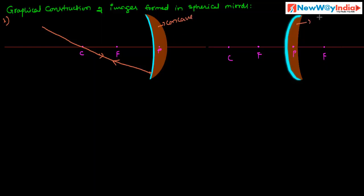In the case of a convex mirror, if a ray of light is directed towards the center of curvature — that is, if you extend the incident ray line, it appears to come from the center of curvature — after reflection, it moves back in the same direction. The reflected ray retraces the same path. This is Rule 3.